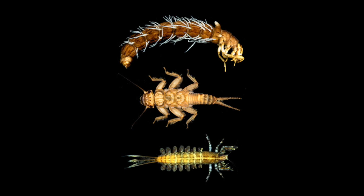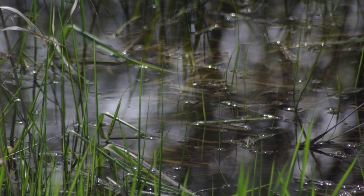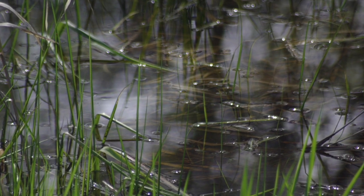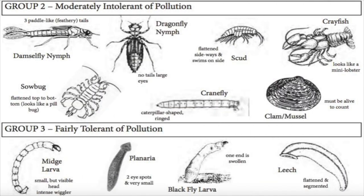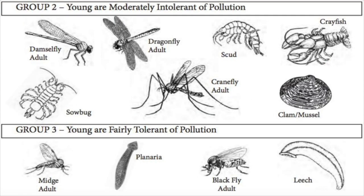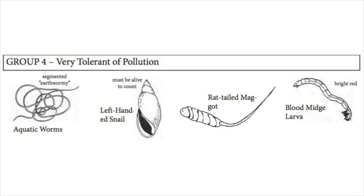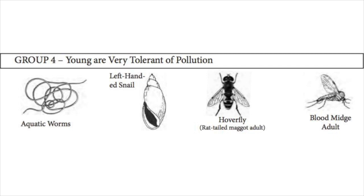However, if these macros are not found in a water source, it doesn't necessarily mean that the water quality is poor. Other natural factors should be investigated, such as the temperature and flow of the water source. There are also some macros that are moderately and fairly tolerant of pollution, such as the damselfly nymph, dragonfly nymph, crayfish, midge larva, and leech. On the other hand, there are macros that are very tolerant of pollution, such as aquatic worms, the left-handed snail, and blood midge larvae. These macros may indicate the presence of pollution and will survive in very polluted waters.